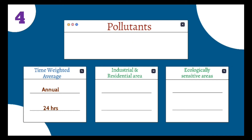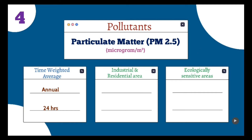The fourth pollutant is particulate matter PM2.5, and its unit is micrograms per meter cube. In industrial and residential areas, the annual value should not exceed 40 µg/m³, and the 24-hour value should not exceed 60 µg/m³.